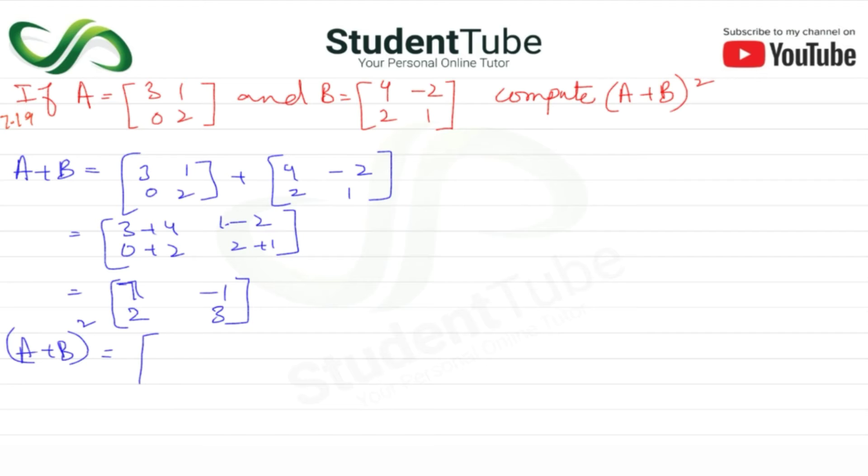Now (A+B)², that means we have to multiply this answer by itself. So [7, -1; 2, 3] multiply by [7, -1; 2, 3]. That gives us 7 multiply by 7 plus minus 1 multiply by 2, then 7 multiply by minus 1 plus...